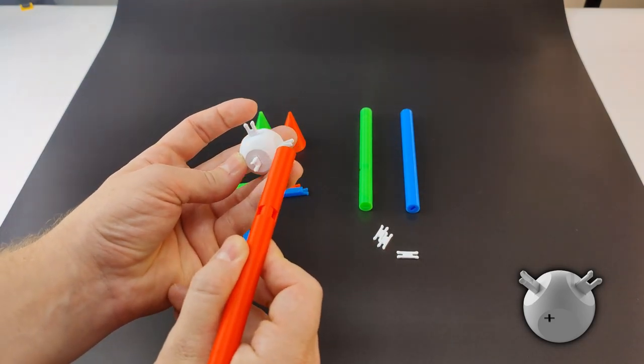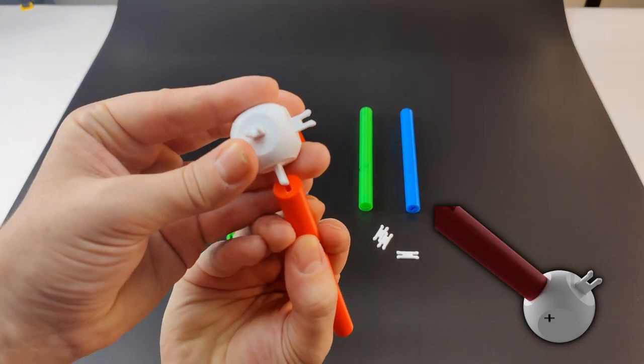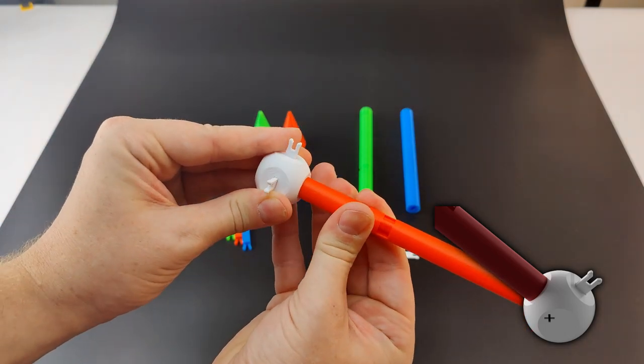Make sure you align these holes with these two clips since that is what the right angle part will clip into later on. And then just roll the pole on like we did when installing the clips into the center ball.